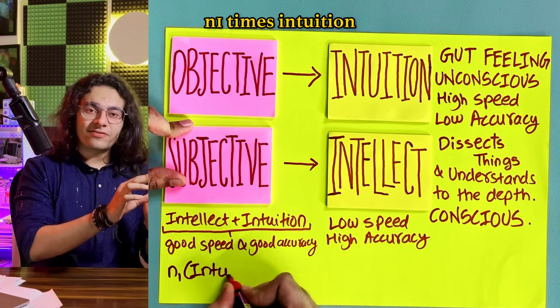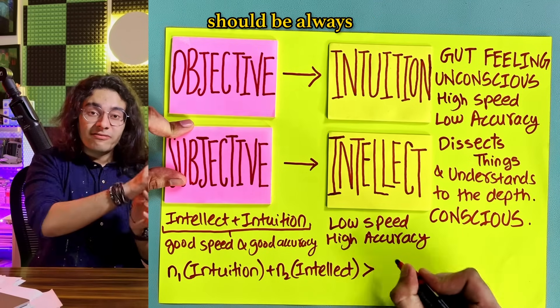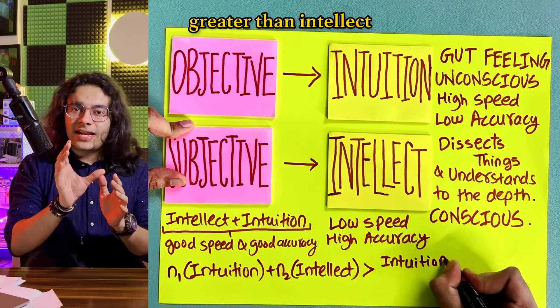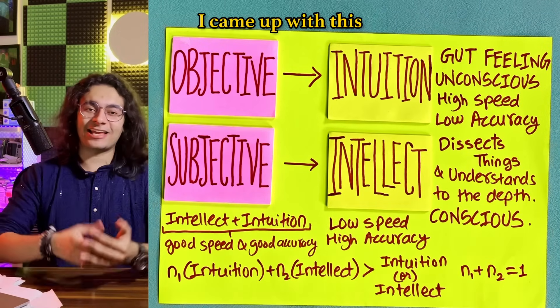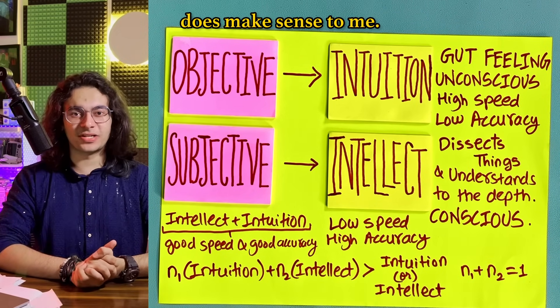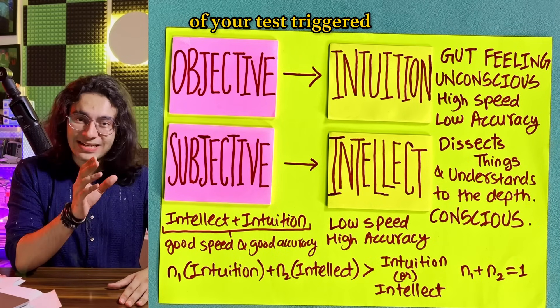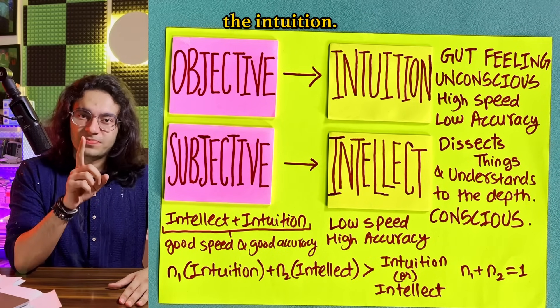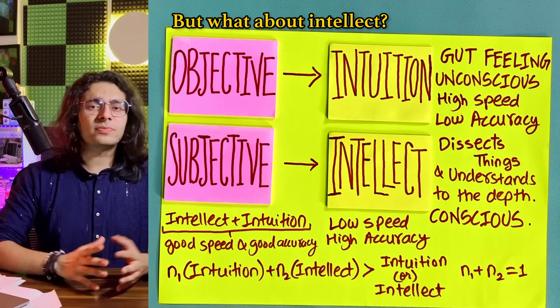It is like this equation: N1 times intuition plus N2 times intellect should be always greater than intellect or intuition where N1 plus N2 is equal to 1. I came up with this equation randomly and it does make sense to me. Now as I've explained the objective nature of your test trigger the intuition and intuition is made strong through practice. But what about intellect? How do you make it strong?